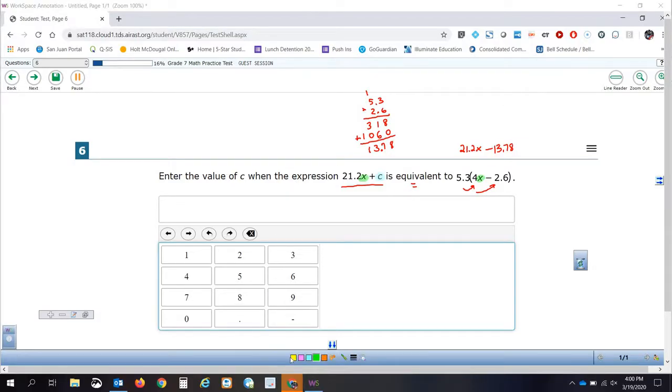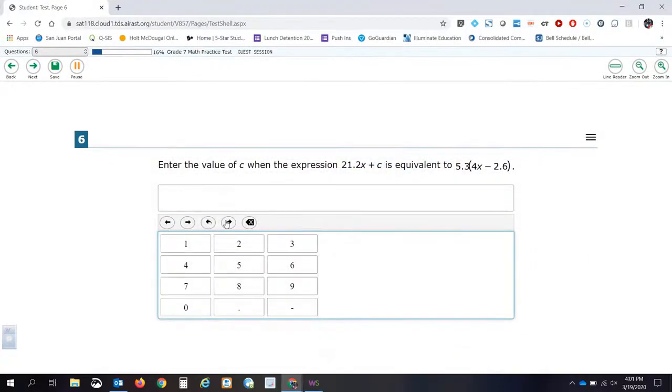So now, if I compare this expression to this expression, remembering I want them to be equivalent, the first part here is already equivalent. Let's take a look at this second part. Notice this is a plus and this is a minus. That means when I go to put my answer, it's going to be a negative, because adding a negative is the same as subtracting a positive. So what I'm looking for is negative 13.78. I'm going to type that in: negative 13.78.